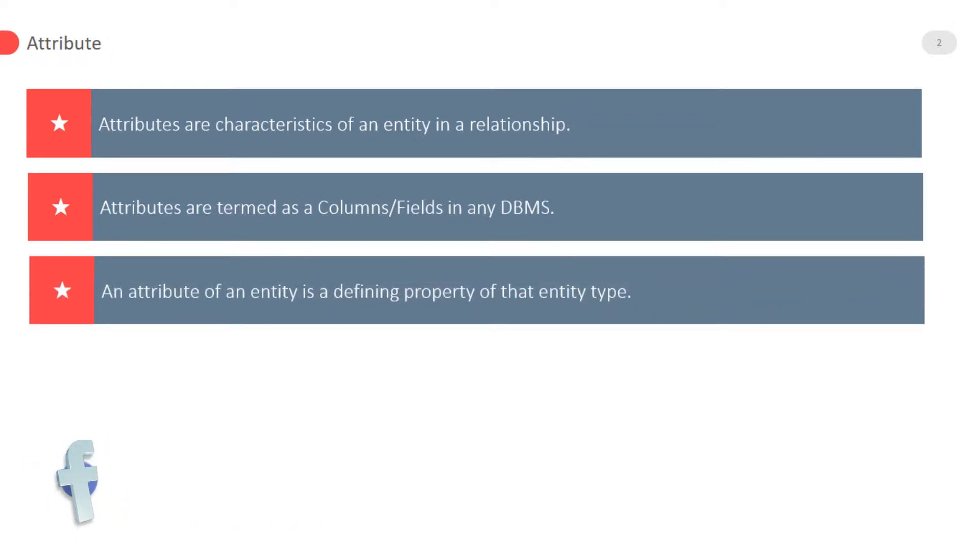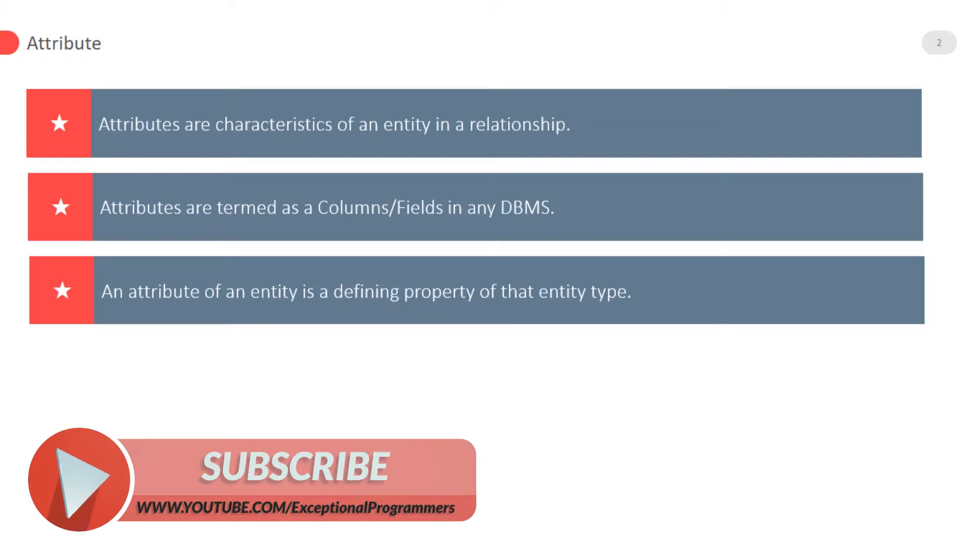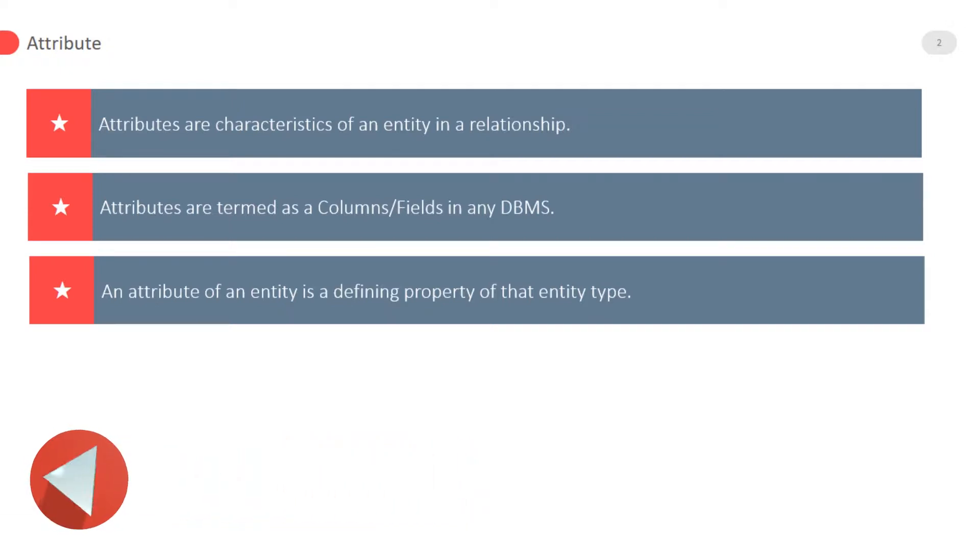The important point is an attribute of an entity is a defining property of that entity type. Instances of entity type have attributes like student identification, student name, and many others related to the student entity.